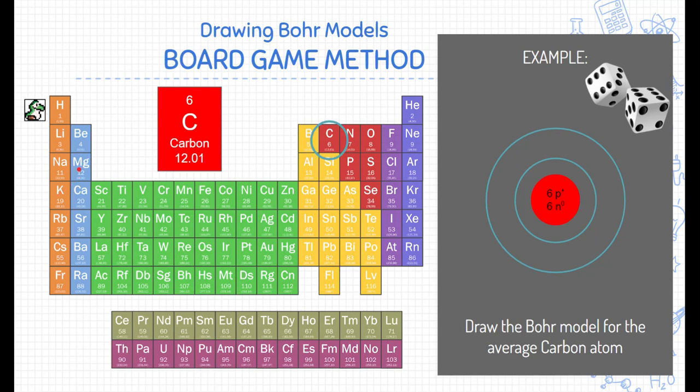So here's my little pawn for my game piece. Now, just as in Monopoly or any other board game, we always start at the first square. So we're going to use hydrogen being square one to help us build the Bohr model for carbon, and we're going to move our pawn through each level of this board game, through each level of the periodic table, to determine where the electrons go. So let's move our pawn to the first square.